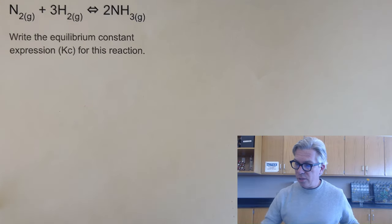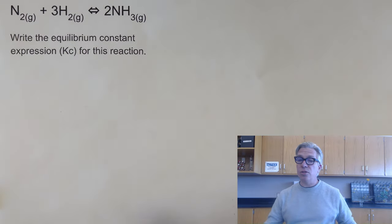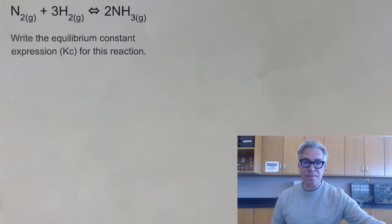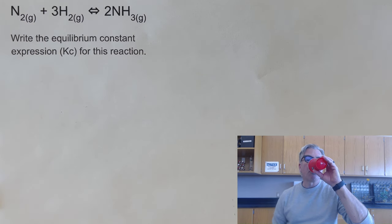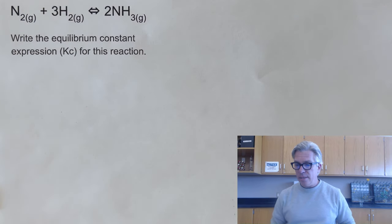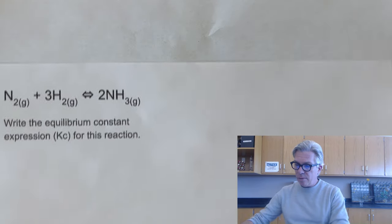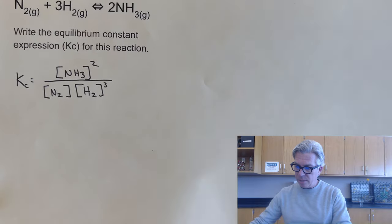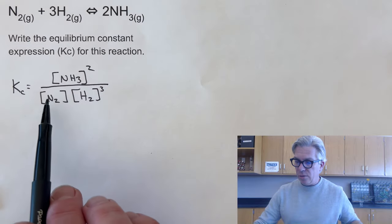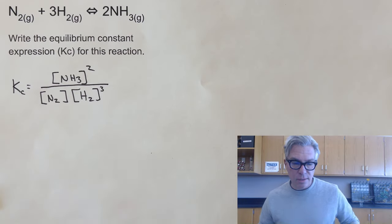Our first pause the video moment for you to try one. Here's a very common reaction, nitrogen and hydrogen making ammonia. Feel free to pause the video and write the equilibrium constant expression for this reaction. So my equilibrium constant expression hopefully looks a little bit like yours. And there you have it. You have NH3 squared over N2 and H2 raised to the third.